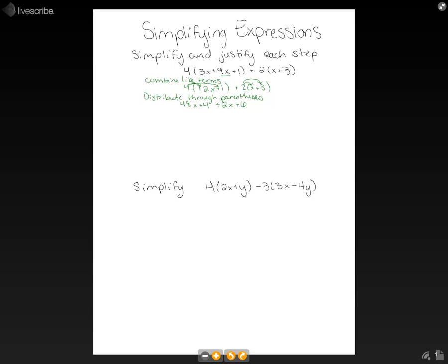Now that we've multiplied these out there's no more parentheses. So once again we can combine like terms. Let's look in our x's. 48x plus 2x gives us 50x. And we have 4 plus 6 gives us 10. So our simplified form of expression is 50x plus 10.